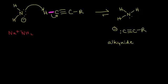Once we've formed our alkynide anion, we can use it to do an alkylation reaction. The alkynide anion has the R group, a carbon triple-bonded to another carbon, with a negative charge on the terminal carbon. This negatively charged anion can now function as a nucleophile.